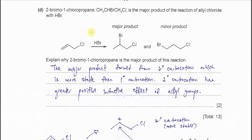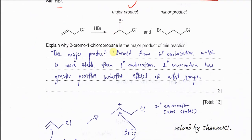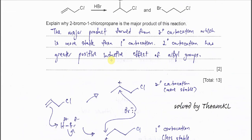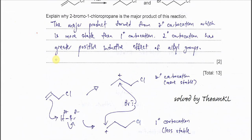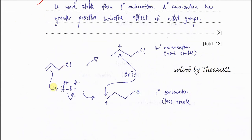Part D. 2-bromo-1-chloropropane is the major product of the reaction of allyl chloride with HBr. Explain why this is the major product. We need to discuss the stability of carbocation. For this reaction, HBr is added to the double bond, and the hydrogen can add to this carbon or this carbon. When the hydrogen bonds to this carbon, which has two hydrogens already, according to Markovnikov's rule, you will form a more stable carbocation.